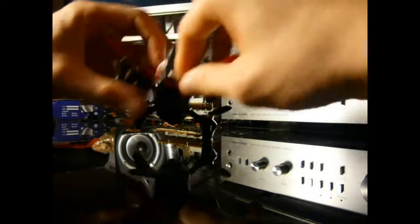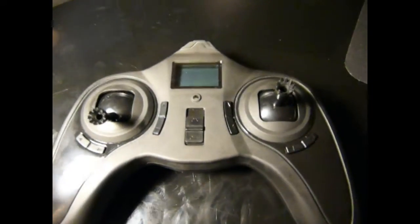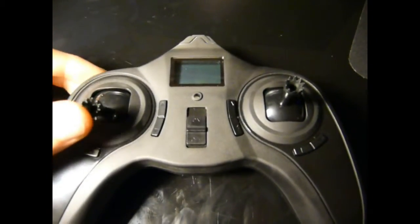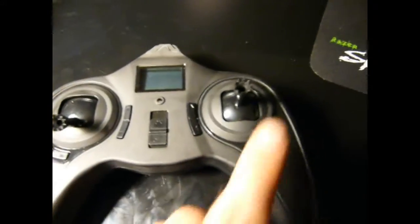So I suppose this bizarre control scheme wouldn't be so bad if you've never flown a quadcopter before, but I haven't. I just couldn't get my brain to forget the standard control layout. So ideally the throttle would be on the left y-axis and the pitch would be on the right y-axis.